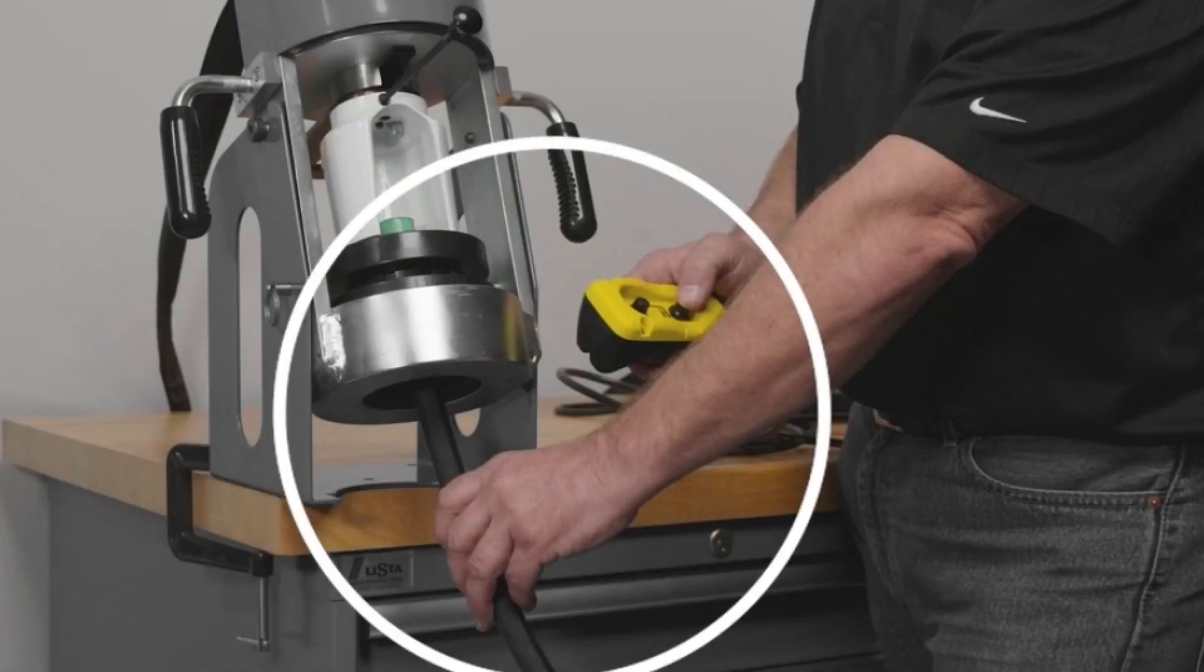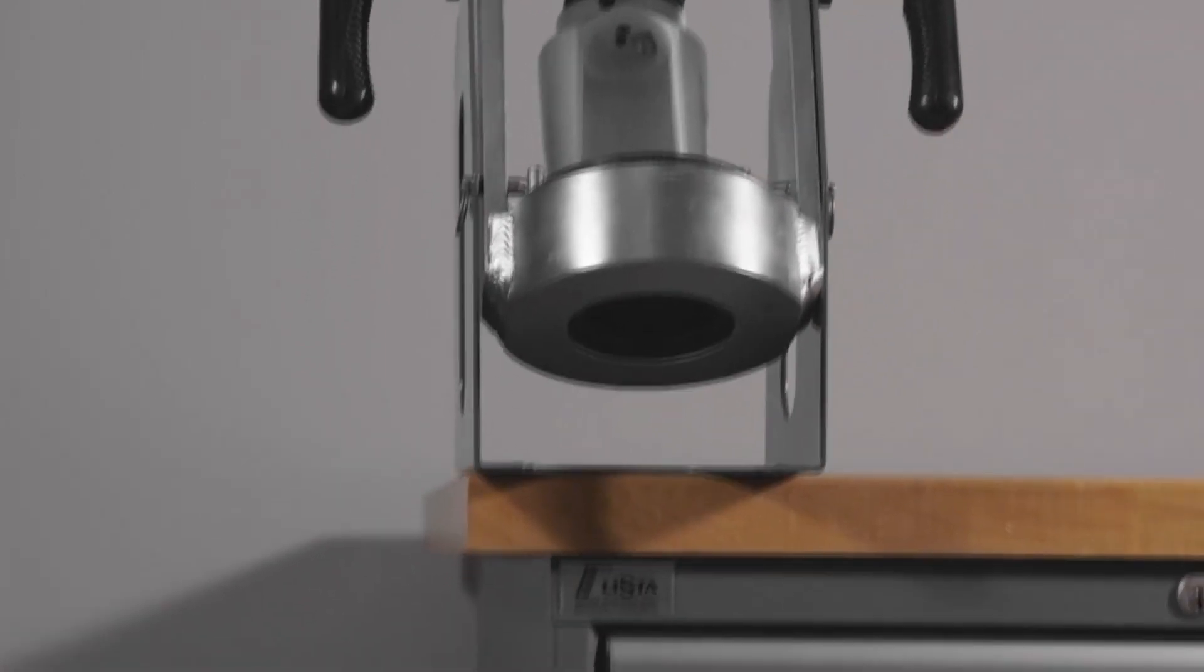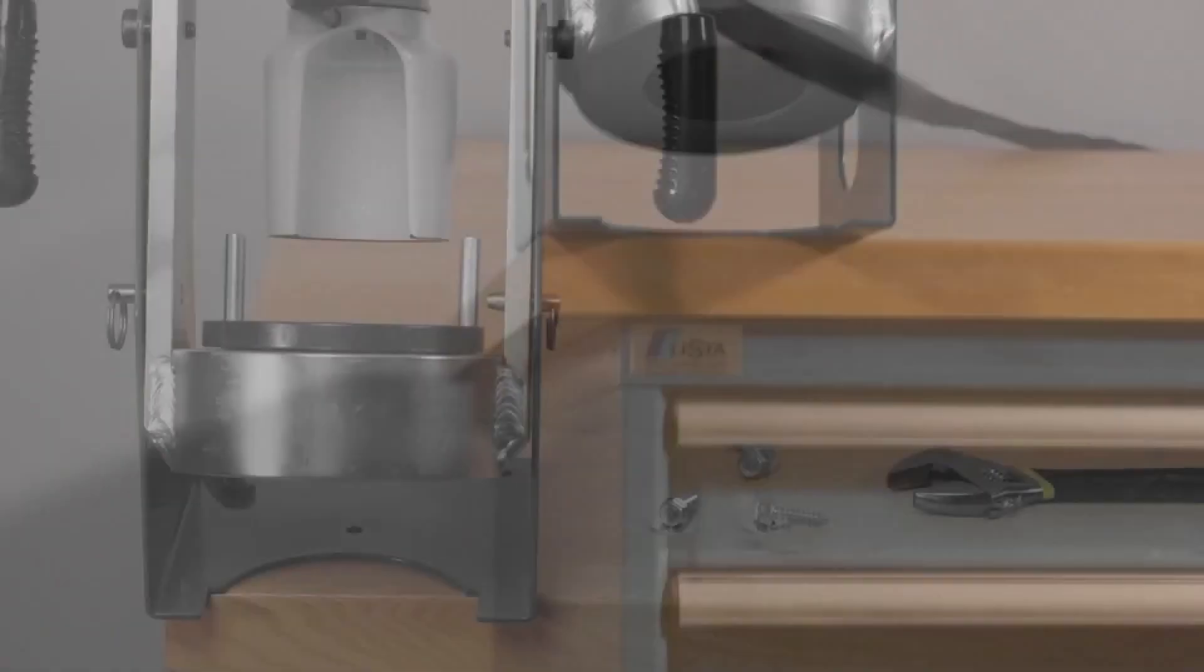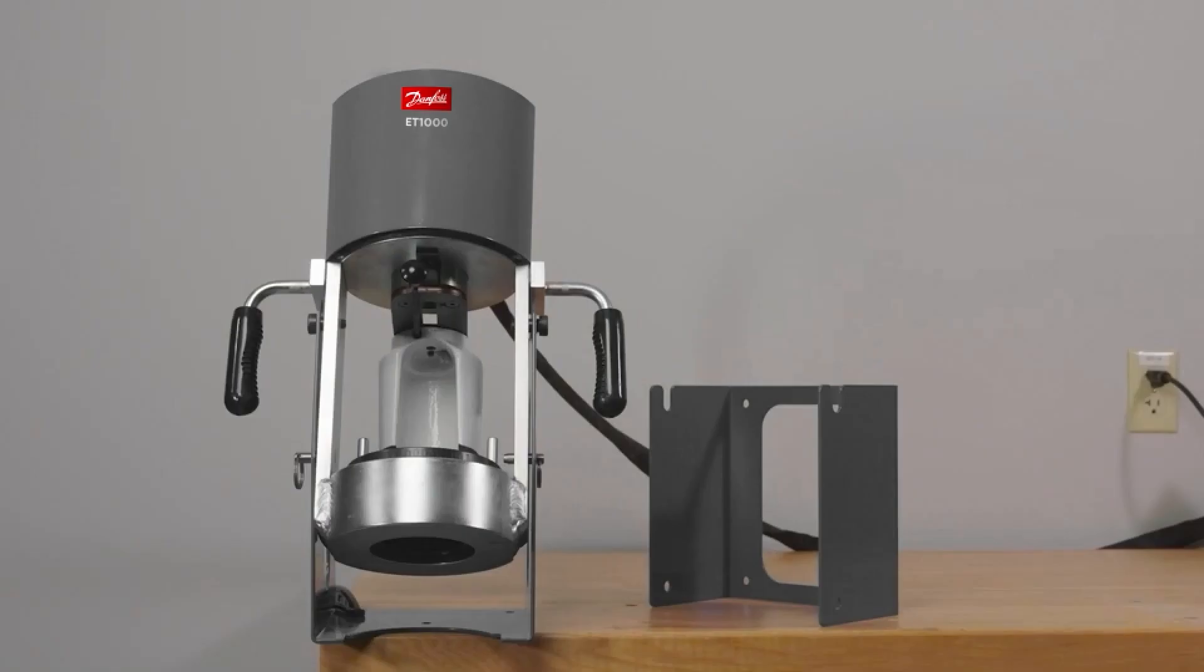Stay clear of all moving parts at all times. Before use, the machine must be assembled to the bench mount base with the supplied hardware and secured to a stable work surface. Note that there is an optional truck mount bracket also available.